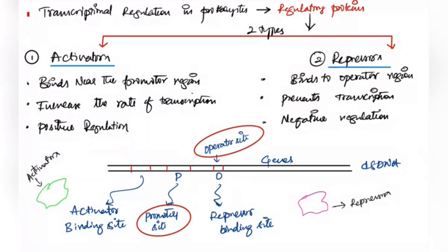When a regulatory protein increases gene expression, it is called positive regulation or positive control. Repressors, on the other hand, have a binding site at the operator region and prevent transcription. When a protein prevents gene expression, it is called negative regulation, because it negatively regulates expression — it does not allow the genes to express.